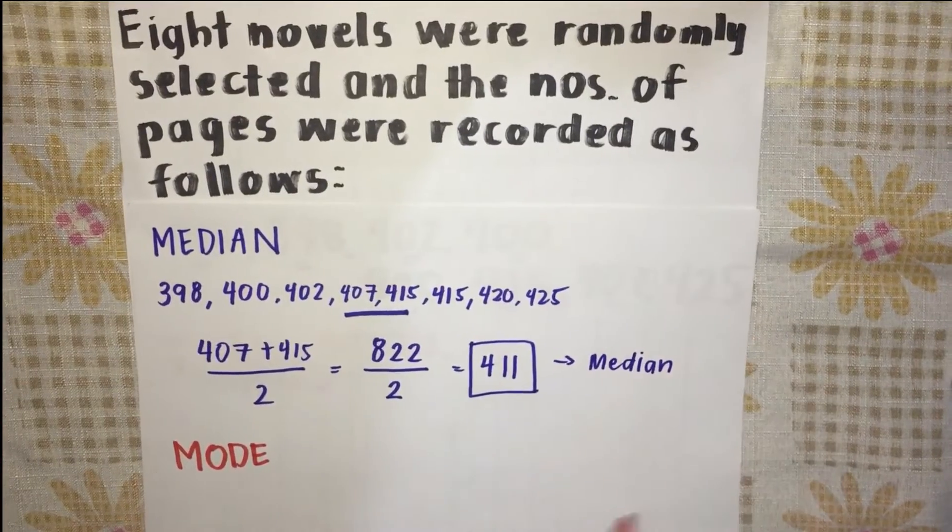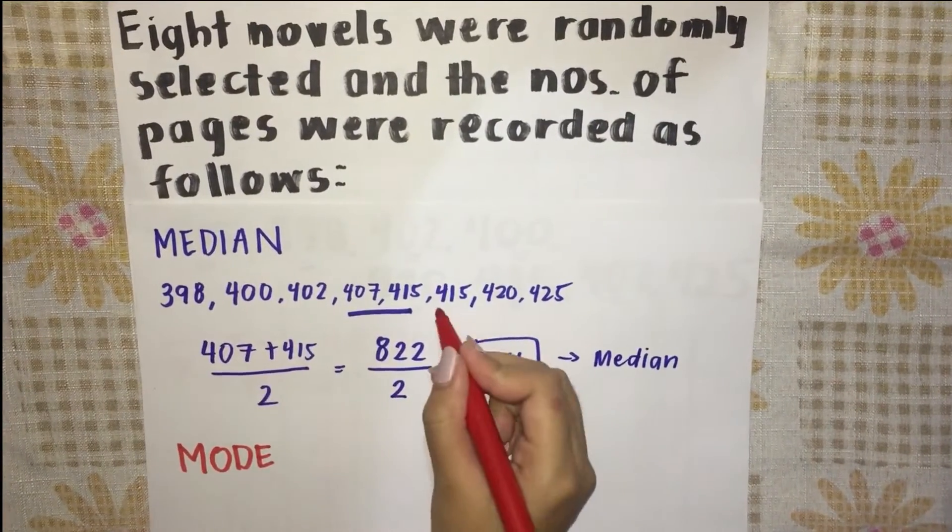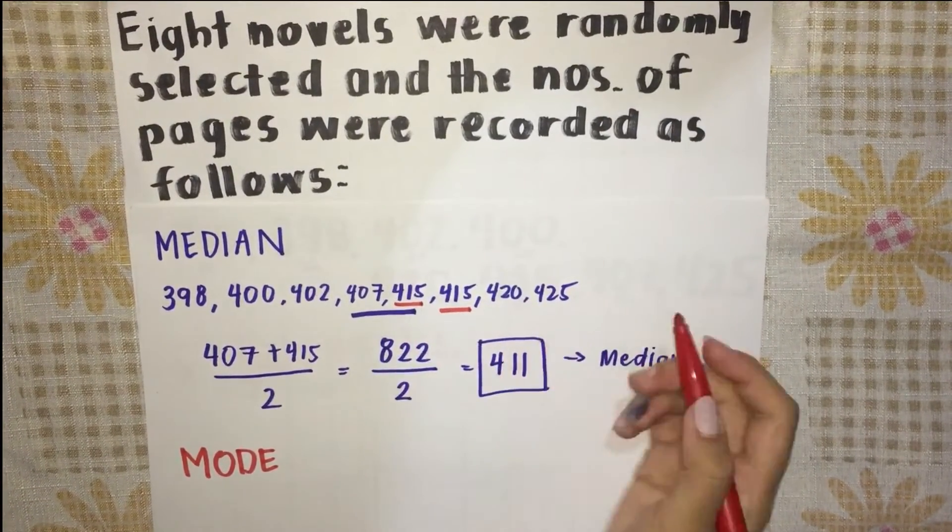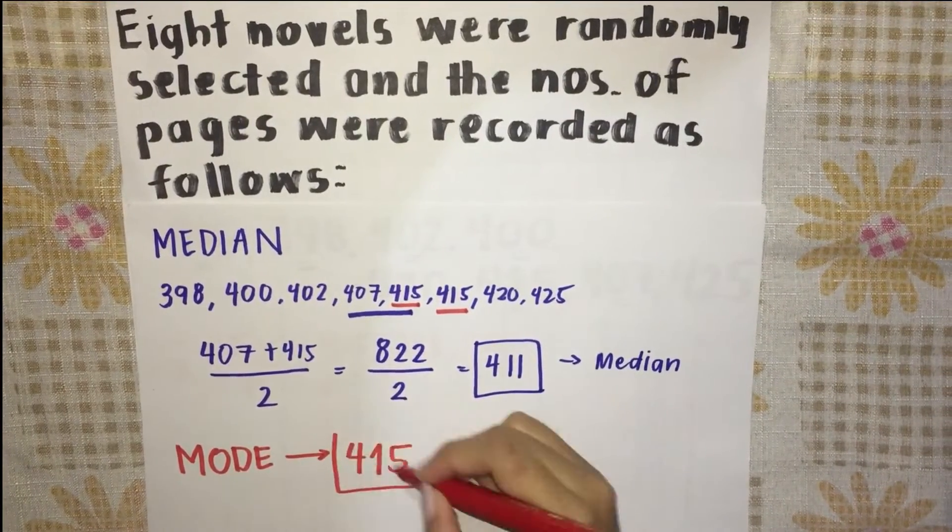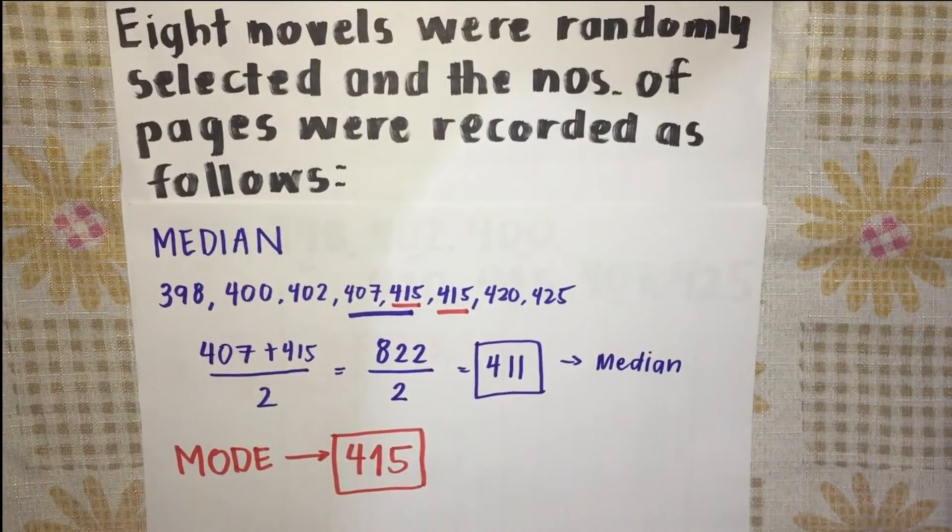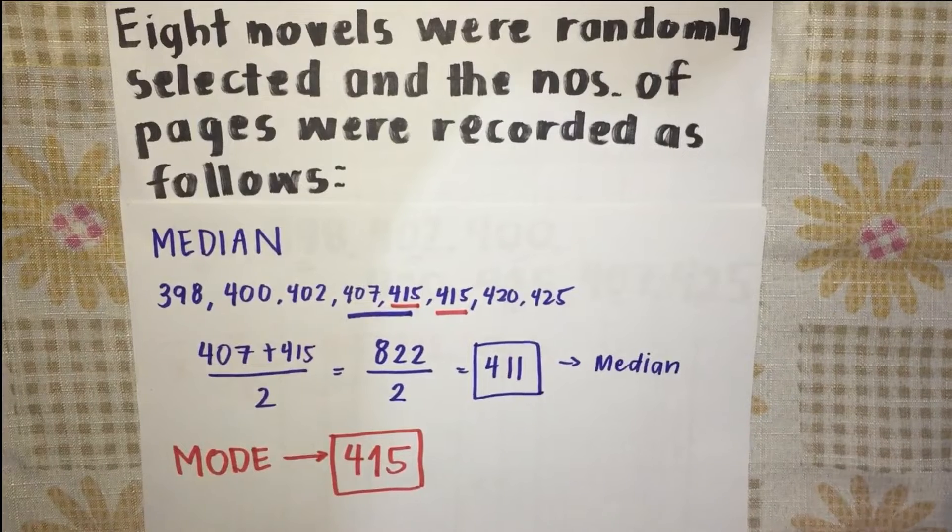To find the mode, find the value with the highest frequency. In this problem, 415 appeared twice. Our mode is 415. This is an example of unimodal distribution.